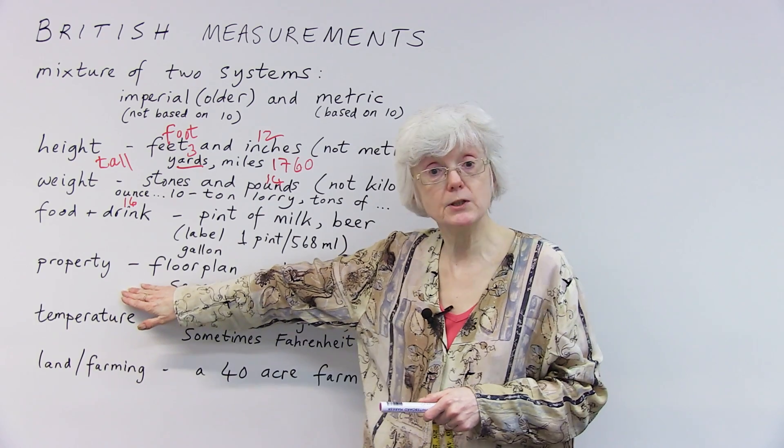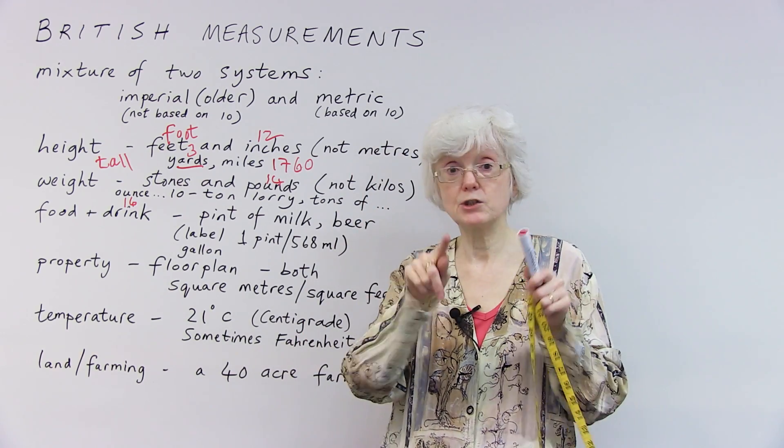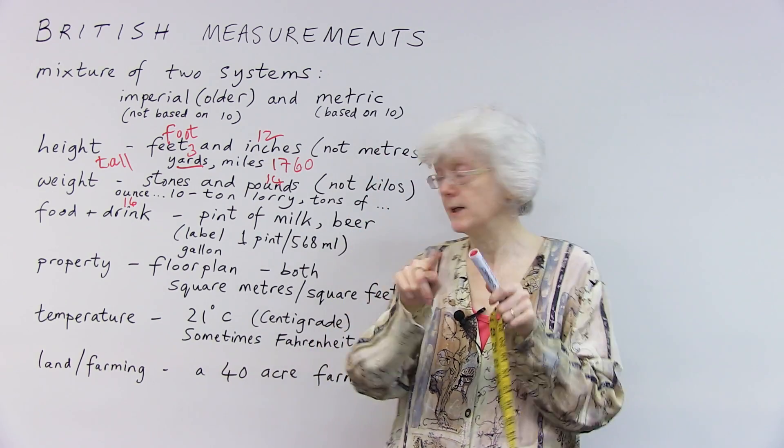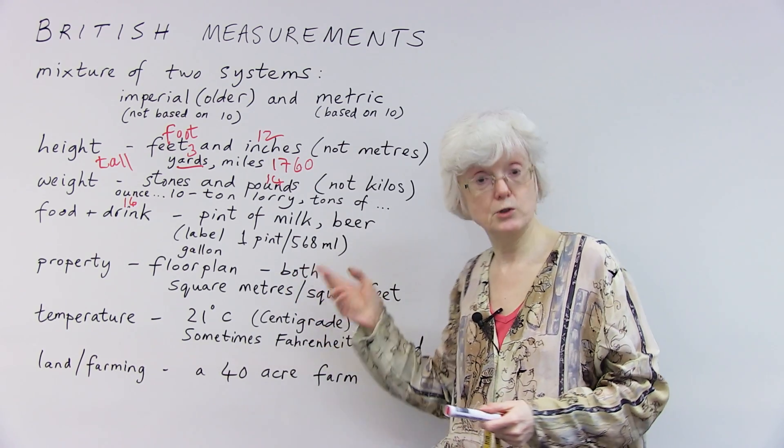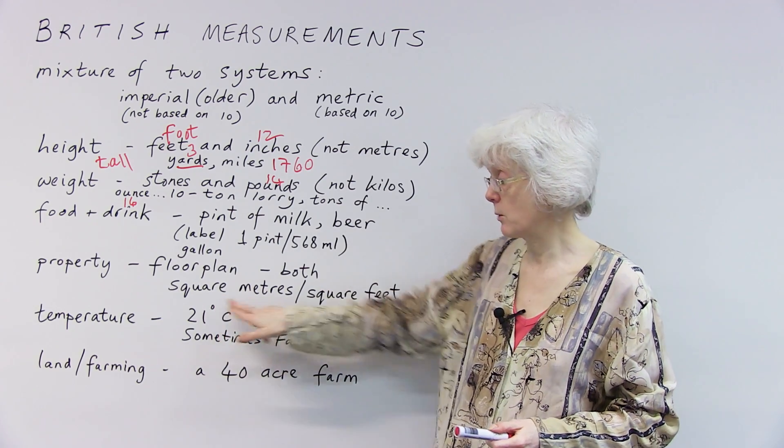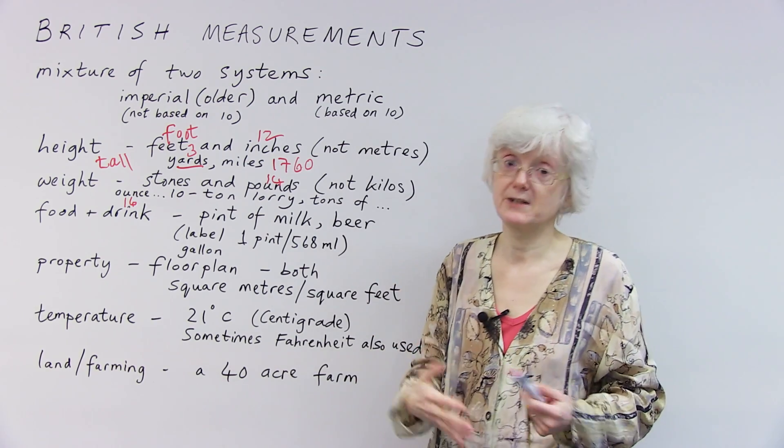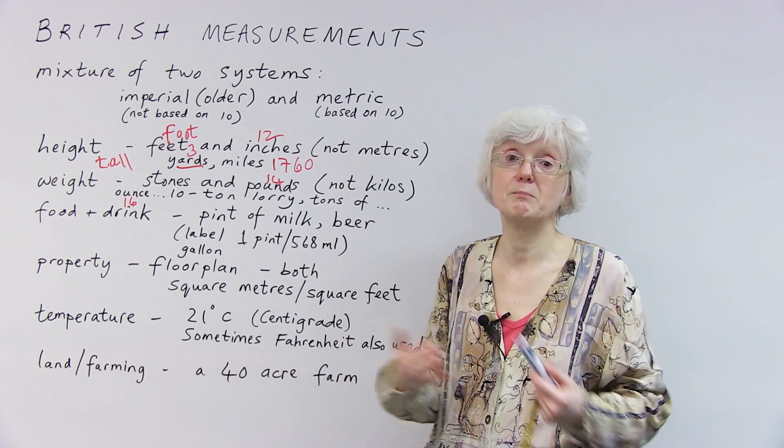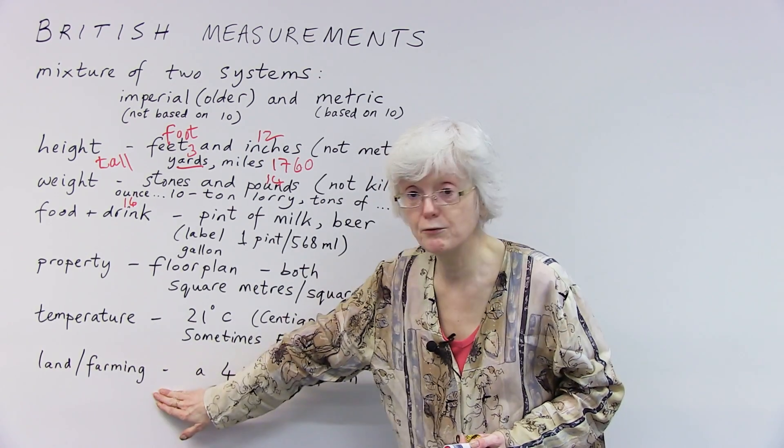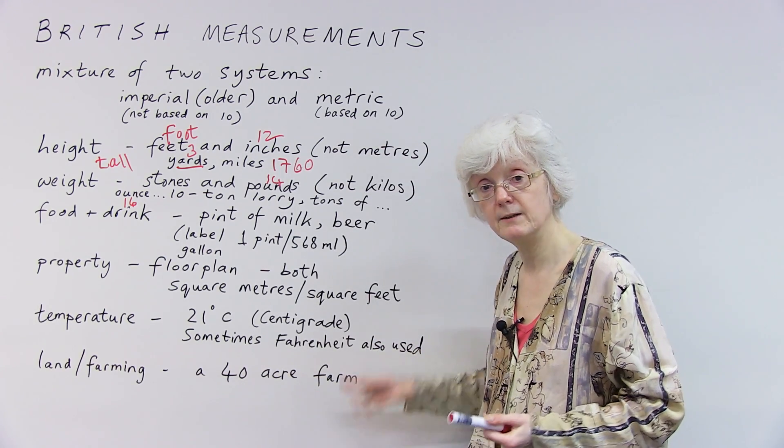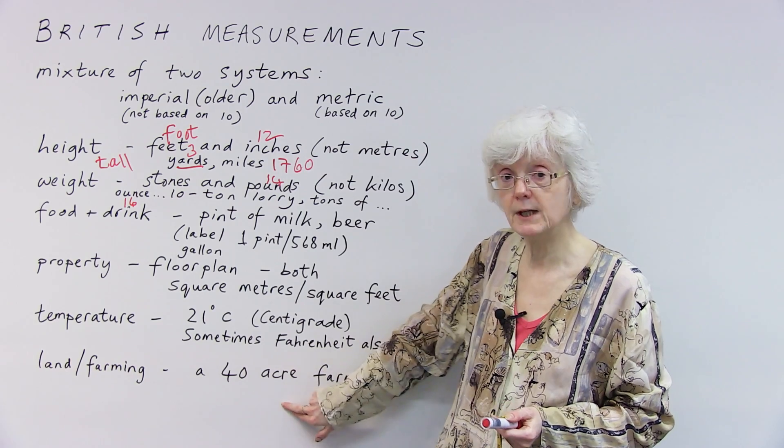So moving on to the measurement of space, such as property. When you're looking at property, there's often a floor plan showing the shape of the room and measurements, the size. And estate agents who are selling the property usually use both measurements. So they use square meters from the metric system and square feet from the imperial system because they want to be as helpful as possible because they're trying to make it easy for people to buy and not get confused. Similarly, with farming, people talk about a 40-acre farm. That's all the fields that go with the farm, 40 acres. That's an old style of measurement.